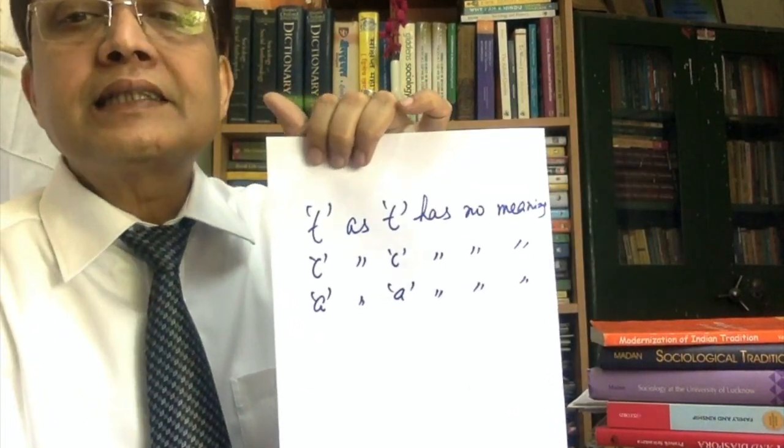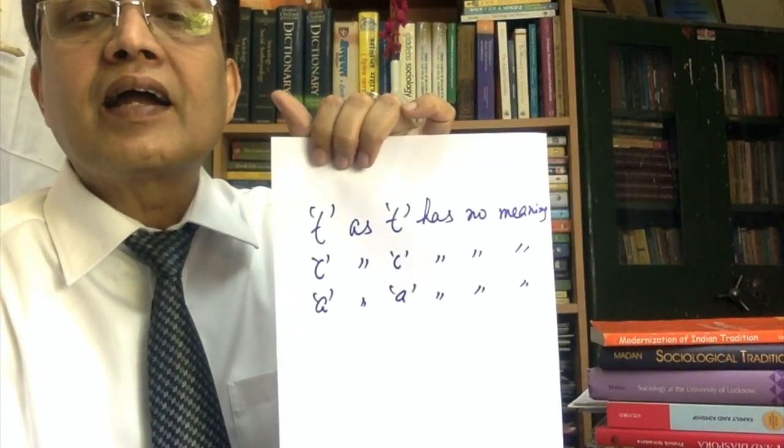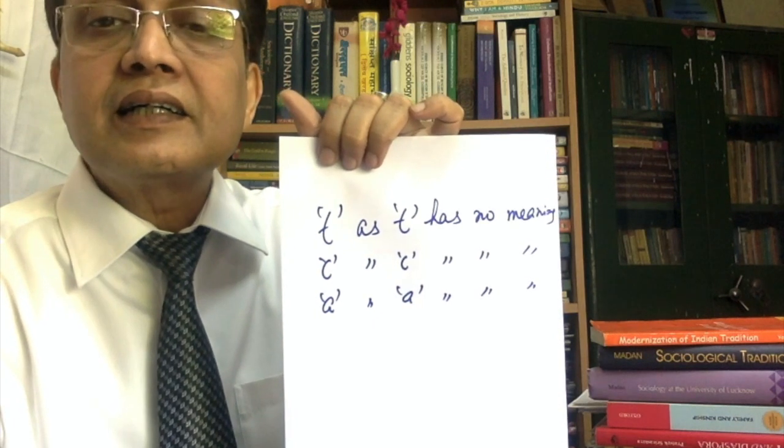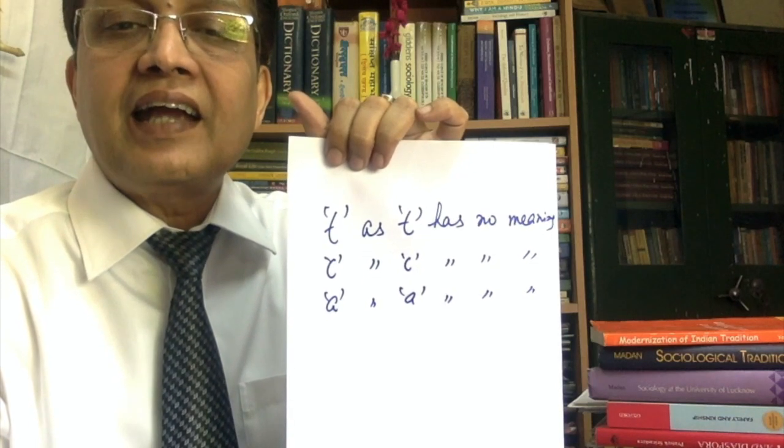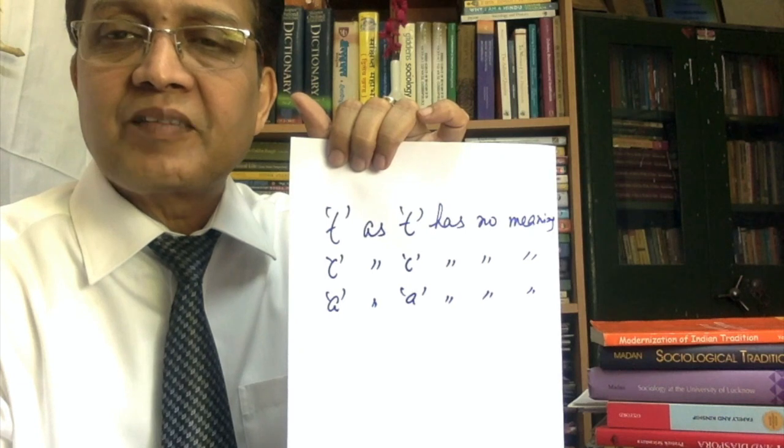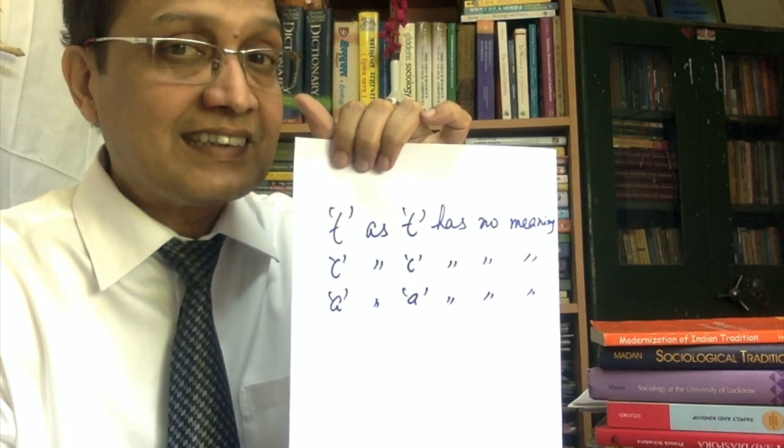Number two: structural linguistics does not take terms as independent entities. Rather, it takes the interrelationship and coherence between them to understand the meaning. For example, T as T has no meaning, C as C has no meaning, A as A has no meaning. Make a coherence — C-A-T — cat means the name of an animal.